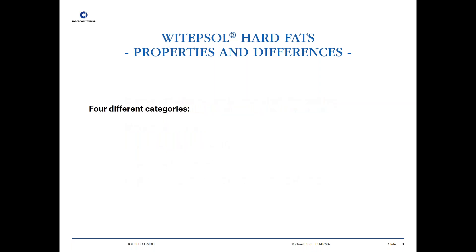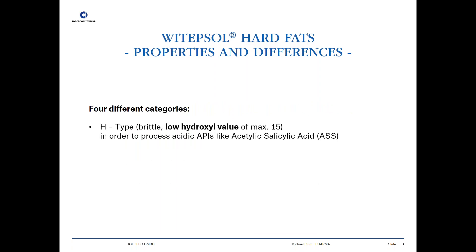Mainly we have four different categories of hard fats, starting with the H type. H stands for hard, meaning a brittle fat exhibiting low hydroxyl values of maximum 15. Lower hydroxyl values are important if you are processing APIs which are a bit sensitive against higher hydroxyl values — for instance, acetylsalicylic acid.